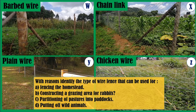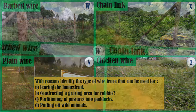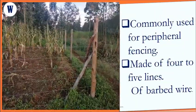I am sure that we can now tell the difference between the types of wire fences. I would like you to attempt the following questions. With reasons, identify the types of wire fences that can be most suitable for: A, fencing the homestead; B, constructing a grazing area for rabbits; C, partitioning of pastures into paddocks; and D, keeping off wild animals.